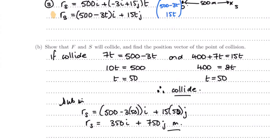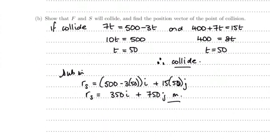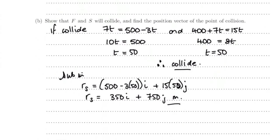Now again you could have used your column vectors, you could have substituted t equals 50 into the position vector for the ferry, you would have still got the same answer. So that is the first video for the kinematics.